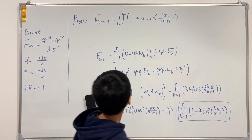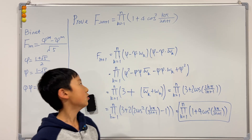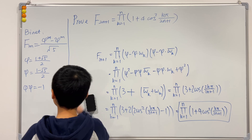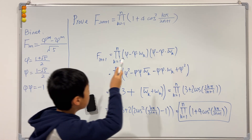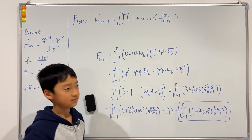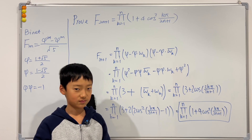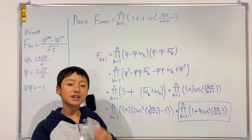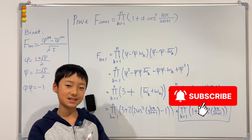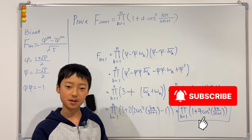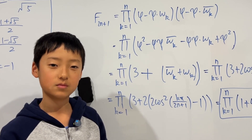And this is exactly the formula we wanted to prove! We have successfully derived from Binet's formula that F(2n+1) equals the product from k = 1 to n of (1 + 4cos²(kπ/(2n+1))). Thank you for watching — if you enjoyed this video and want more content like this, please consider liking and subscribing. Remember: if you want to master something, teach it.